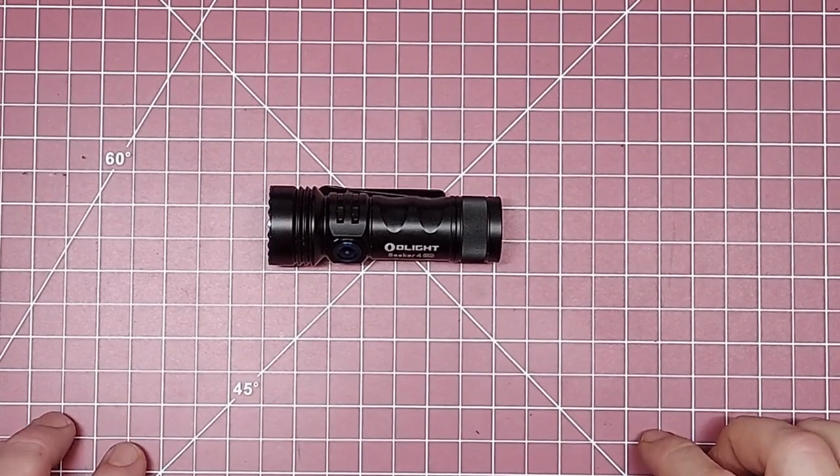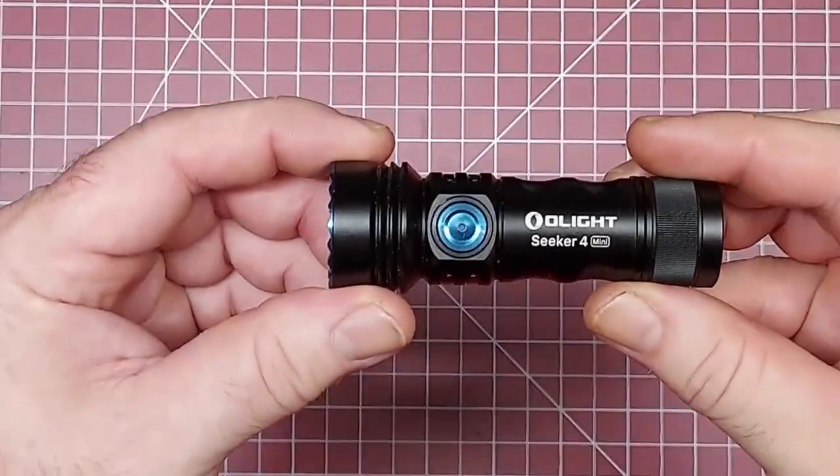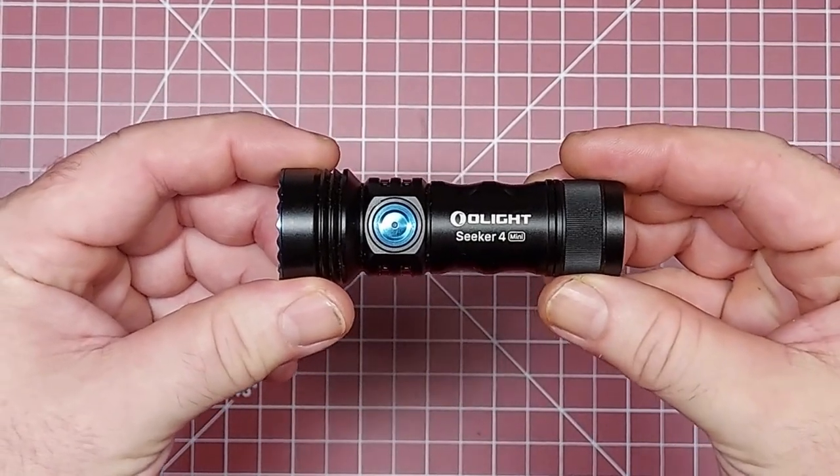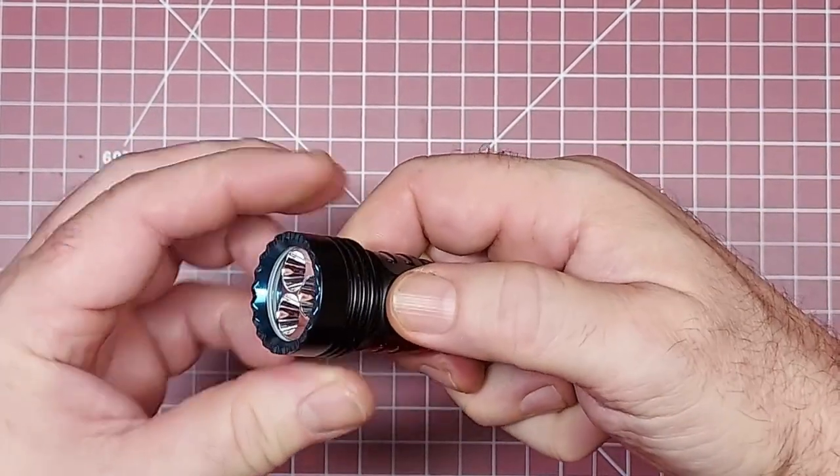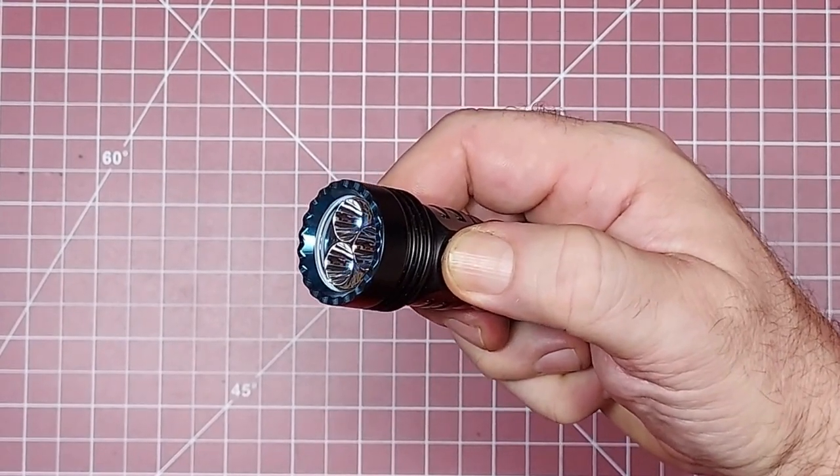Hey what's up guys, Average Gear Reviewer here. Real quick, I wanted to show you how to turn on the Olight Seeker 4 Mini. Like a lot of the Olights, it's going to be a hold down for two seconds.